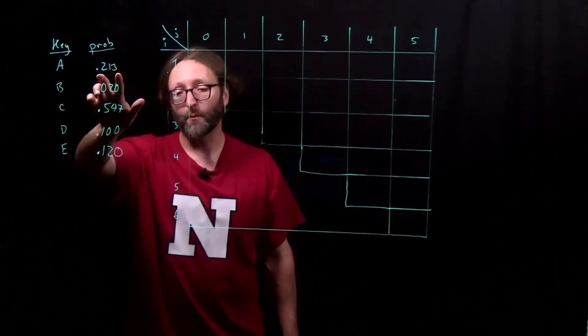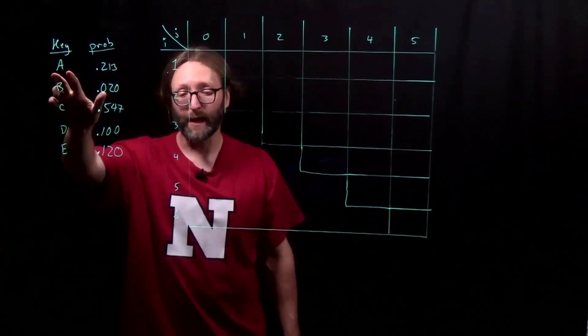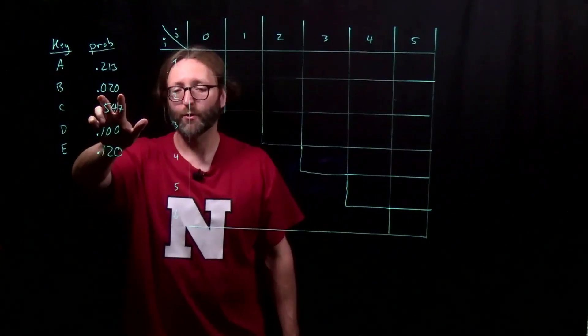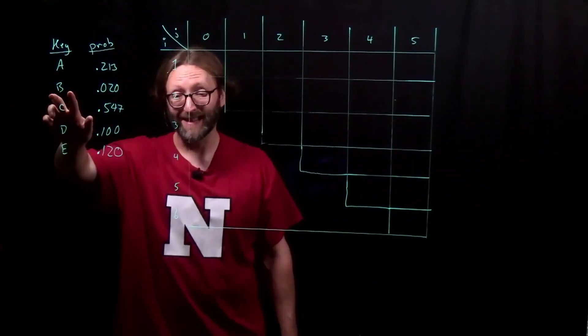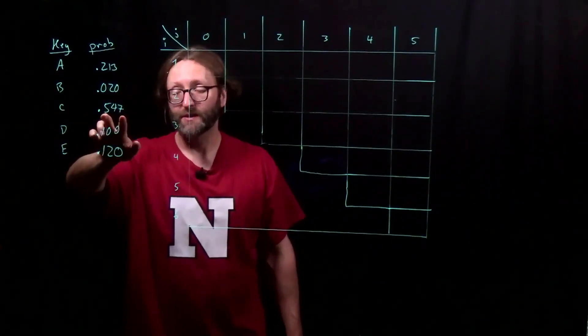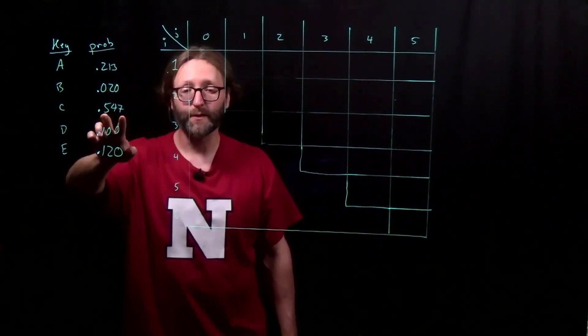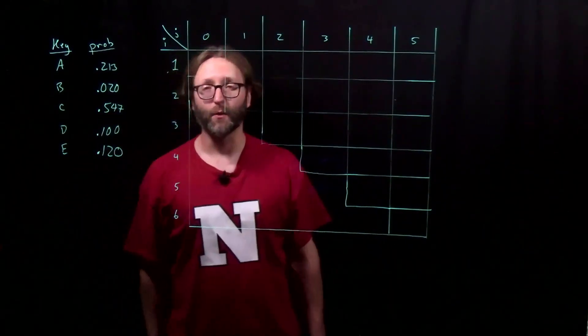With probability 21.3%, we'll search for key A. With only 2% probability, we'll search for B, so it's the least common. But C, we'll search for this over 50% of the time. And D and E as well.